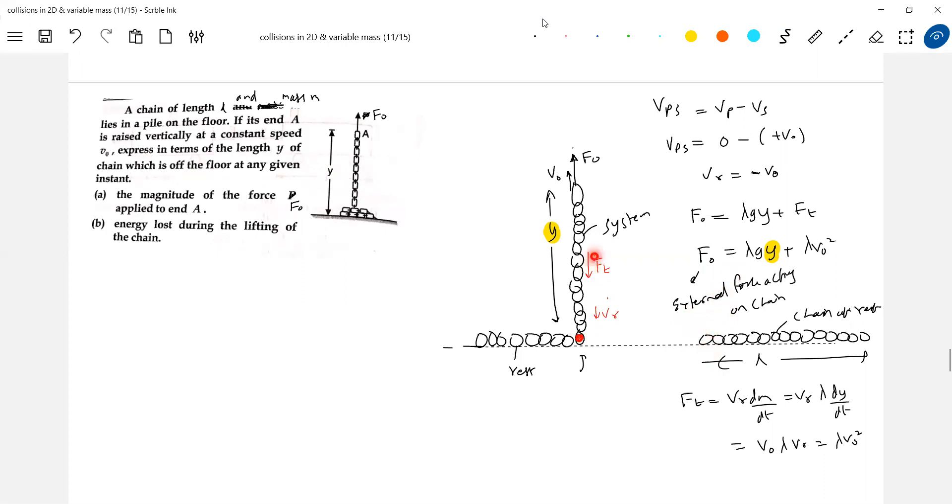A part of it is used to rise the potential energy of the chain. Gravitational potential energy. Because center parts of the chain got lifted up. So, increase in gravitational potential energy of the vertical part of the chain. This is the one thing. Next again, kinetic energy of the chain.